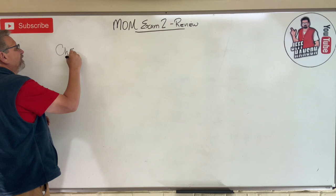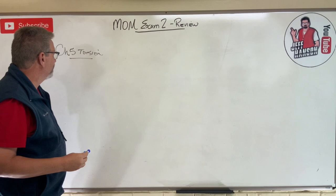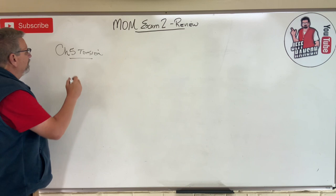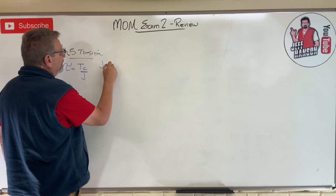So here we go. Chapter five, torsion. What do we remember? What do we see? What do we learn in these chapters? What are we going to have on the test? Here's what I think you have. You got torsion-generated shear stress, which we remember was Tc over J.